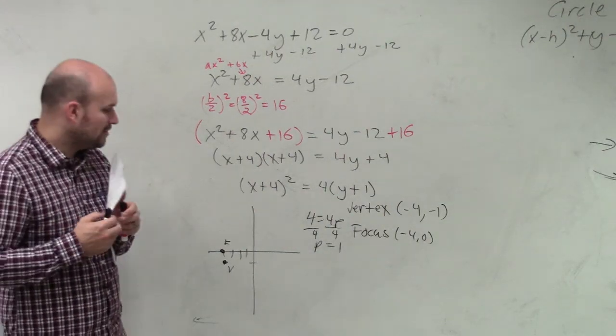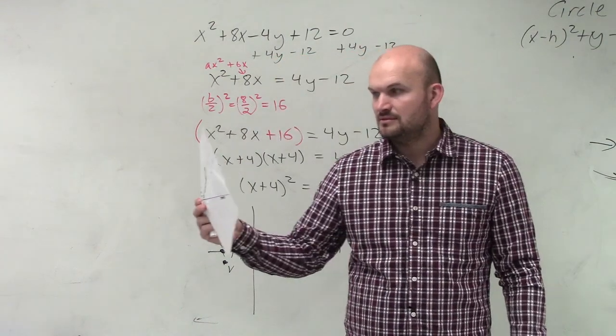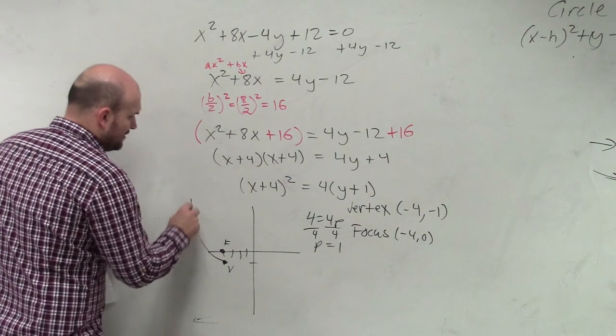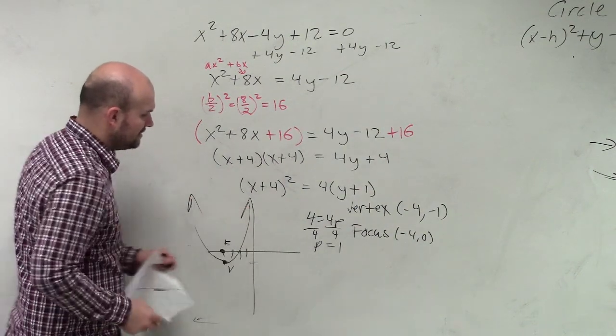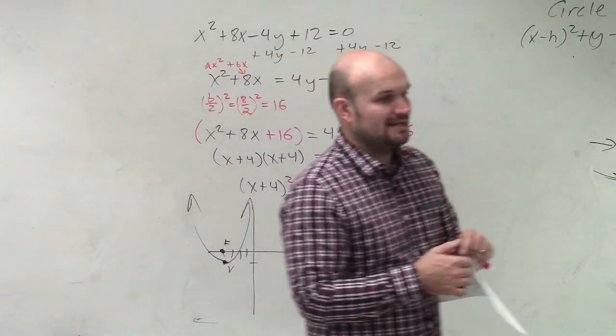I'll label that as F. So I say my focus is negative 4 comma 0. Now, another important point. Does your parabola open up towards your focus or away from your focus? Towards your focus. So it's pretty easy to sketch a graph. Do I care what your parabola looks like? No, not the shape as long as it's opening in the right direction.